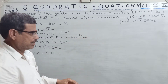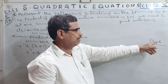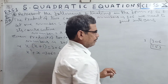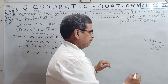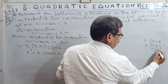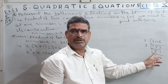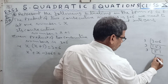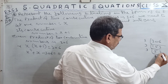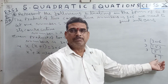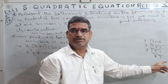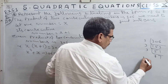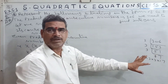Now we factorize 306. Dividing by 2: gives 153. Dividing by 3: gives 51. Dividing by 3 again: gives 17. Since 17 is a prime number, we stop. So 306 equals 2 into 3 into 3 into 17. We need to convert this into two numbers whose difference is 1.